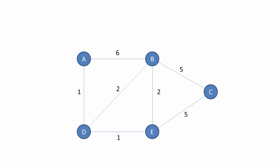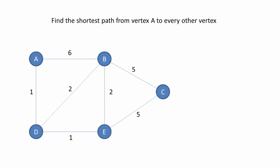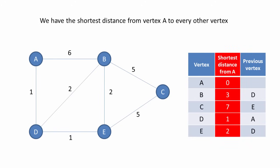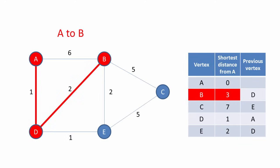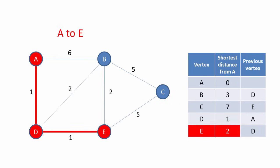Consider this simple graph. Our objective is to find the shortest path from A to every other vertex. Once it is run, Dijkstra's algorithm will generate information which includes everything we need to know. We have the shortest total distance from the starting vertex to all of the other vertices. The total shortest distance from A to B is 3, from A to C it's 7, from A to D it's 1, and from A to E it's 2.